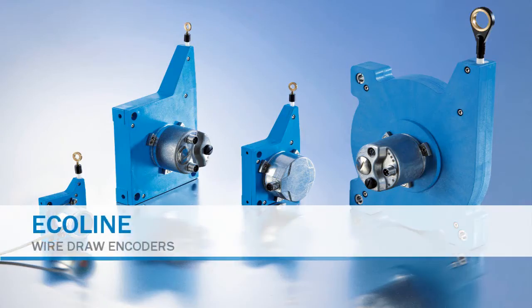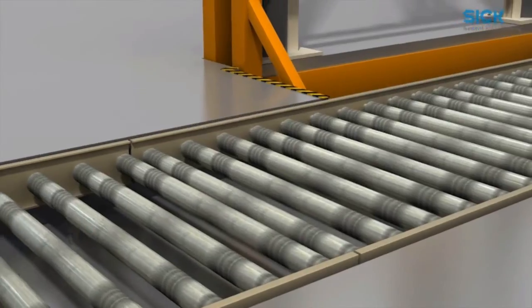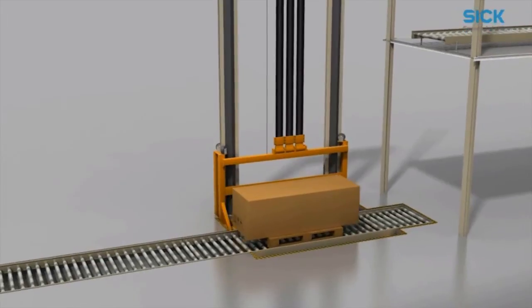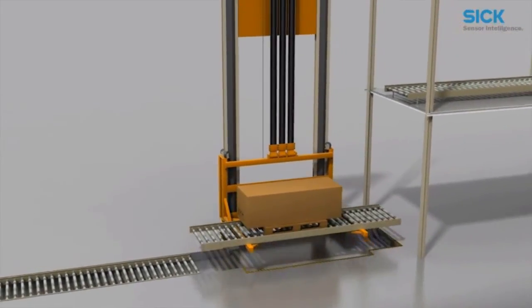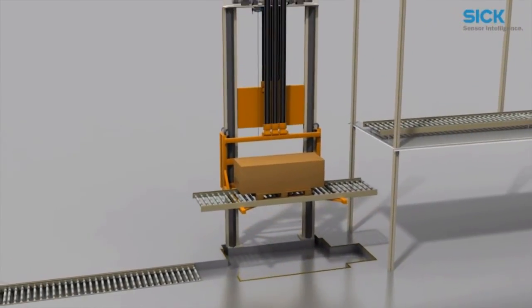The Ecoline wire draw encoder product family can also be used for measuring lengths up to 10 meters. Its slim design makes this encoder perfectly suited to lifters with limited space.